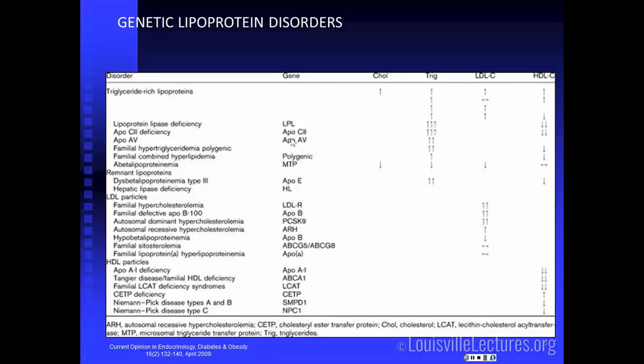Familial hypertriglyceridemia is polygenic. Then you have remnant lipoproteins, which involve ApoE — ApoE mutations will cause an increase in triglycerides. If you don't have ApoE, the chylomicron remnants cannot be removed from the circulation, so you accumulate triglycerides, and it is associated with low HDL cholesterol.